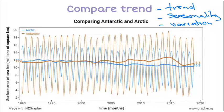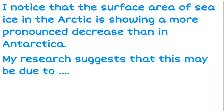If I look at the brown solid trend line through the middle versus the solid blue trend line through the middle, one of them is reducing much more than the other. The blue line is our Arctic and I notice that the blue line is going down much quicker than the brown one. The surface area of sea ice in the Arctic is showing a more pronounced decrease — a much bigger decrease — than Antarctica.